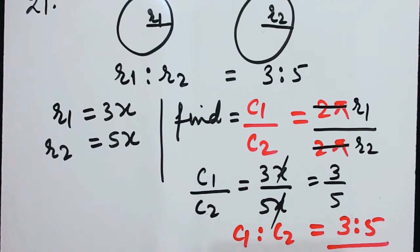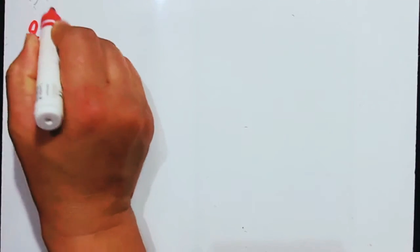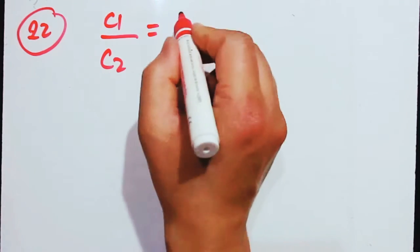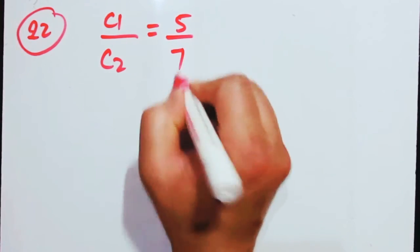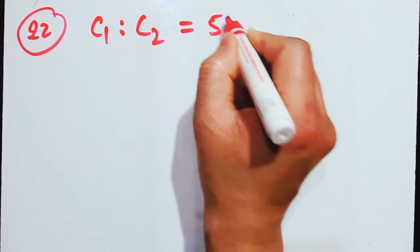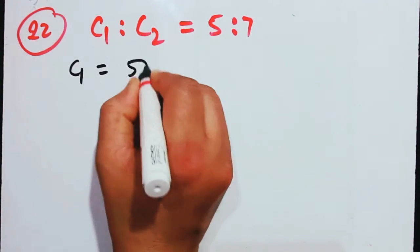Number 22: the circumferences of two circles are in the ratio 5 is to 7. This time they have given the circumferences. So C1 is to C2 equals 5 is to 7, meaning C1 equals 5x and C2 equals 7x.